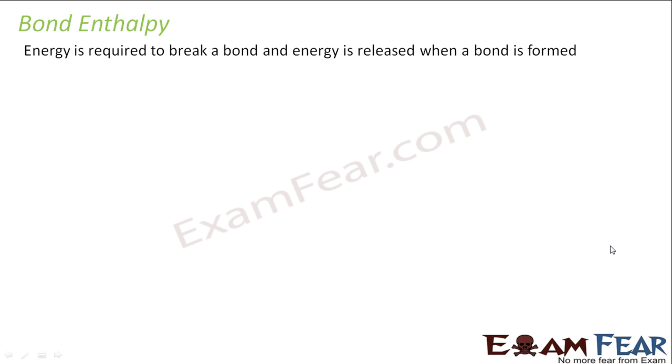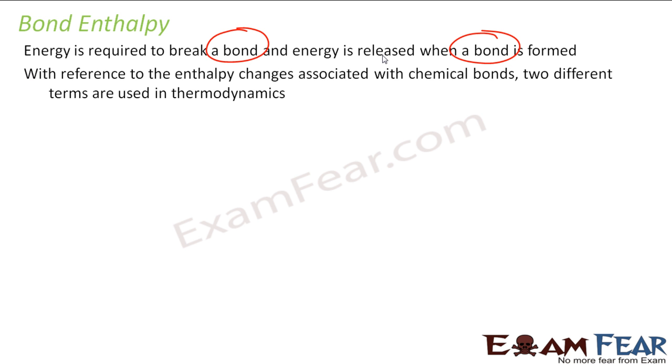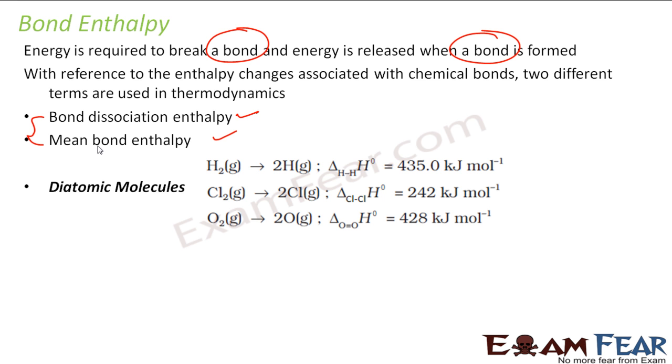The bond enthalpy. We already know that energy is required to break a bond and energy is released when a bond is formed. With respect to the chemical reaction, there are two types of terms we use: one is the bond dissociation enthalpy and the mean bond enthalpy.